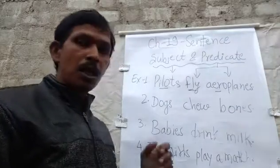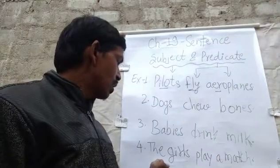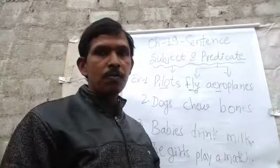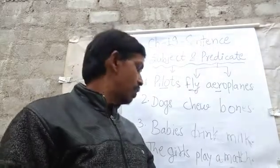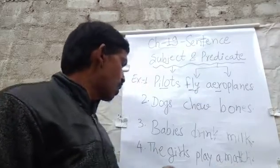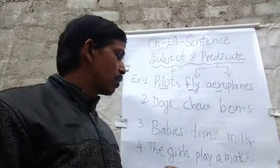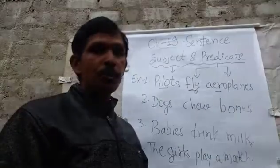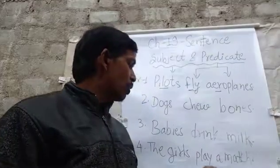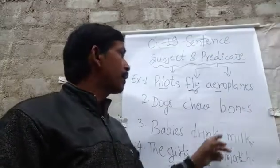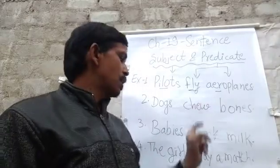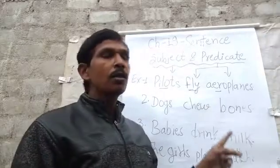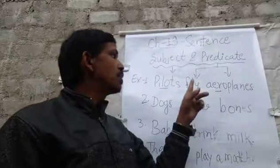Now we will see another example: the girls play a match. Here, 'the girls' is the subject, 'play' is the verb, 'match' is the object, and both the verb and object make the predicate — 'play' and 'match' together make the predicate.